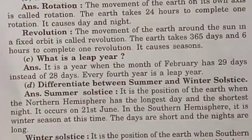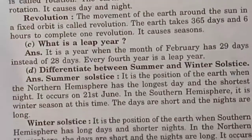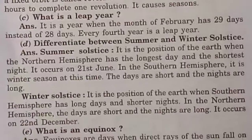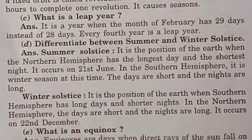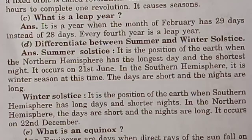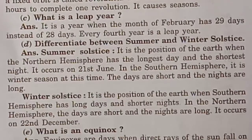Winter solstice: it is the position of the Earth when the southern hemisphere has long days and shorter nights. In the northern hemisphere, the days are short and the nights are long. It occurs on 22nd December.